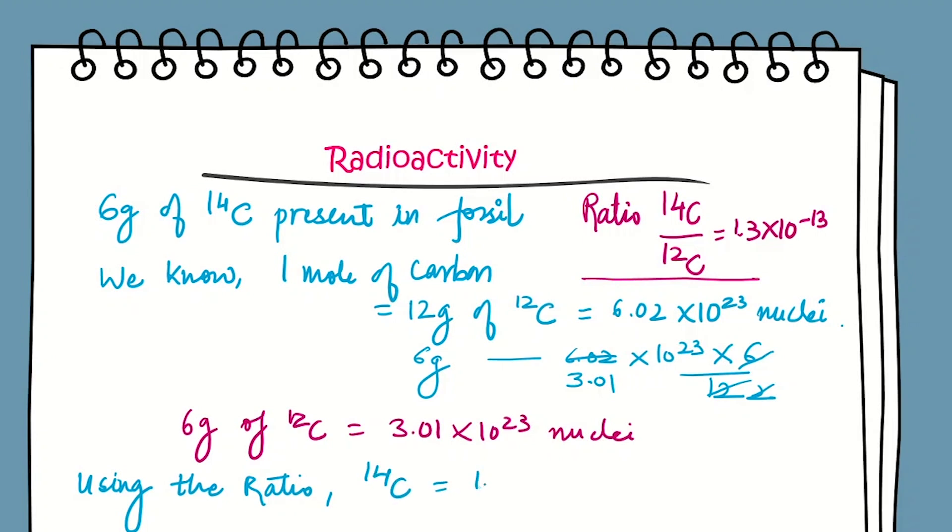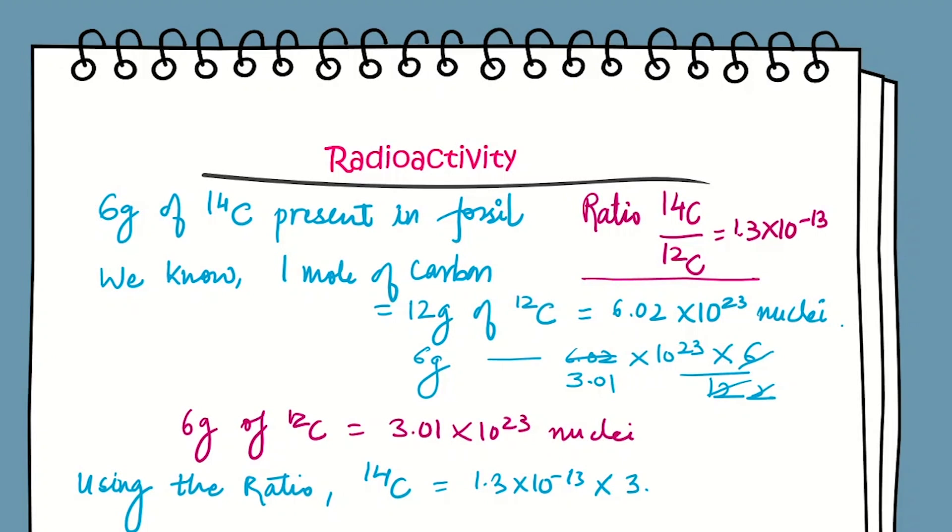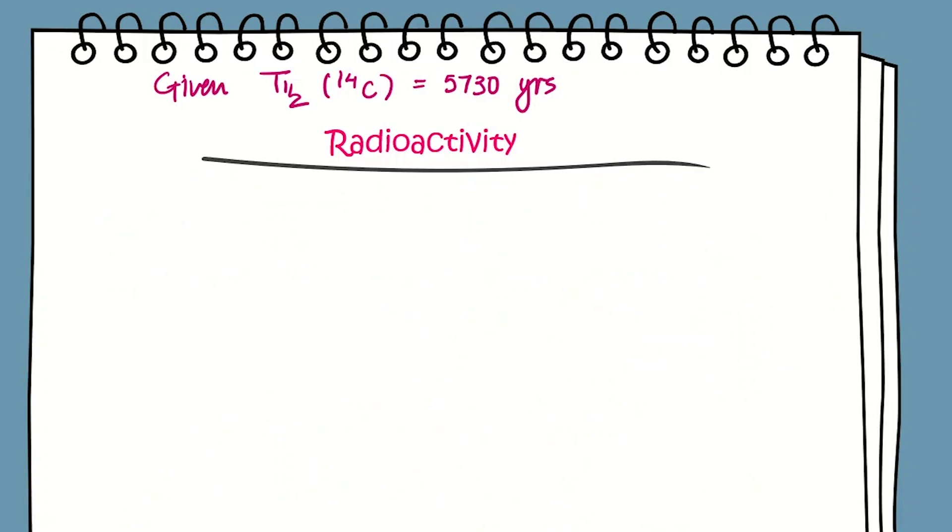Using the ratio we can find 14C nuclei. We just have to multiply 1.3 × 10^-13 times the number of 12C nuclei in 6 grams, that is 3.01 × 10^23. After solving this we get 3.91 × 10^10 nuclei.